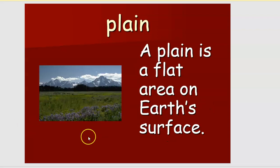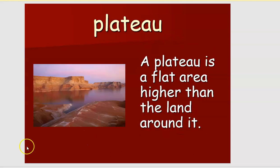What is a plain? A plain is a flat area on the earth's surface. Like where we are staying now — it's a plain, a flat area. What is a plateau? A plateau is also a flat area, but it is higher than the land around it. So a plain is flat on the land, and a plateau is flat but elevated above the surrounding land.